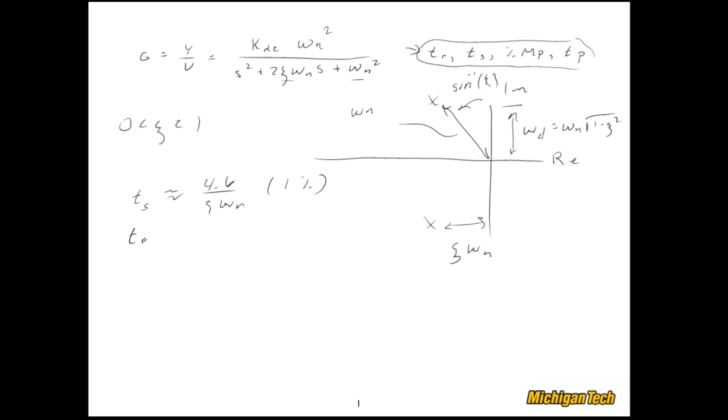The rise time, this is the time it takes to go from 10% to 90% of the final value, is approximately 1.8 over omega n. Now this works great when zeta is about 0.6.